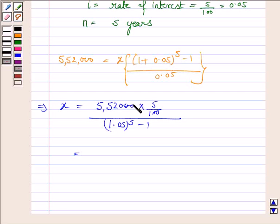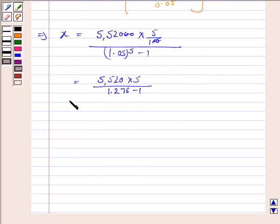Now, 2 zeros get cancelled and we have 5,52,000 into 5 upon (1.05)^5, which is given to be 1.276 minus 1, which equals 27,600 upon 0.276, which equals 1,00,000.